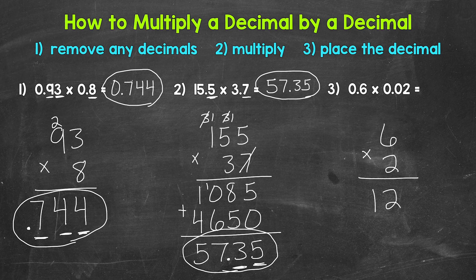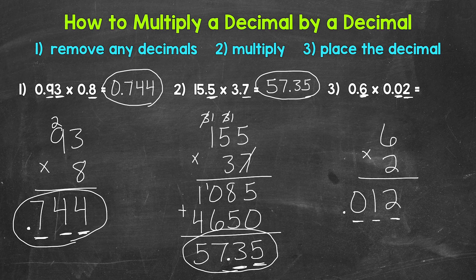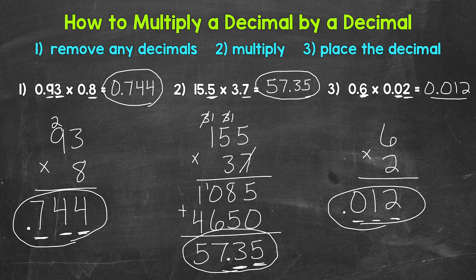6 times 2 is 12. So we end up with 12. Now we need to place the decimal. Looking back at the original problem, we have 1, 2 — yes, we count that 0 — 3 decimal digits. That means our answer needs 3 decimal digits. So 1 digit, 2 digits, 3 digits. We need a placeholder 0 here in the tenths place, and our decimal goes to the left of that 0. So now we have 3 decimal digits in our answer. This is our final answer: 12 thousandths, 0.012.